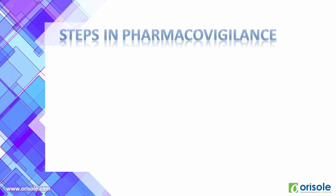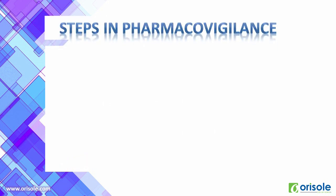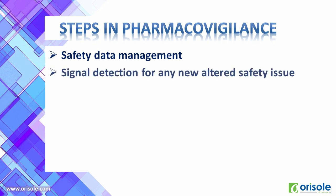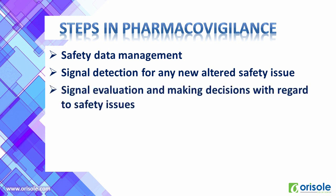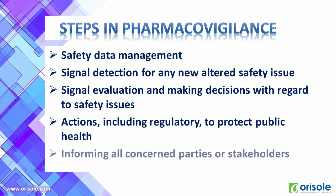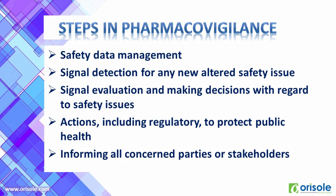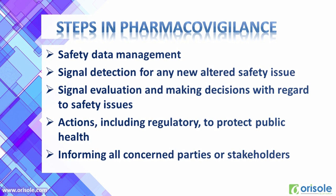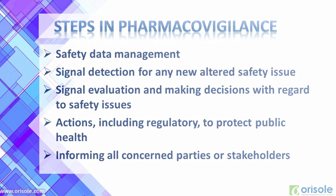Now let us see the various steps in pharmacovigilance: safety data management; signal detection for any new or altered safety issue; signal evaluation and making decisions with regard to safety issues; actions including regulatory actions to protect public health; and informing all concerned parties or stakeholders. The steps may differ in different countries or companies based on their specifications and requirements.